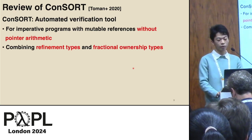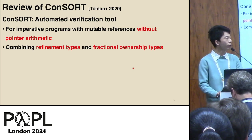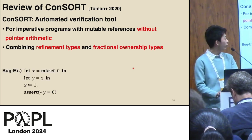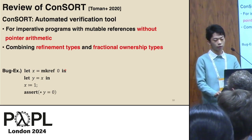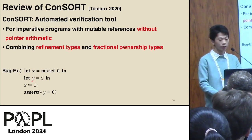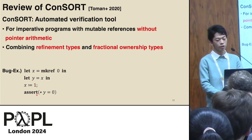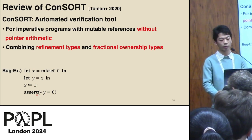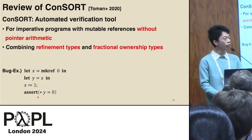Let's see through examples of how to use ownership types to handle mutable references. This program creates x as a reference to 0, creates an alias y for x, and then updates the value of x to 1. The assertion on the last line fails, because x was updated to 1, the value of y has also been updated to 1.